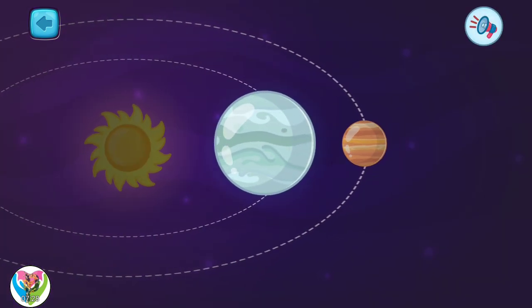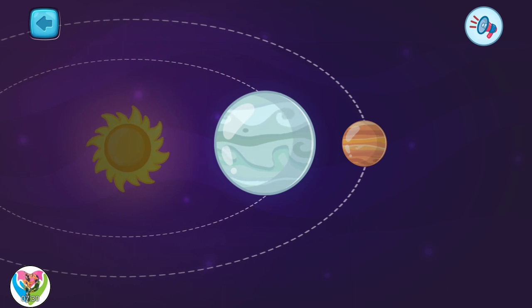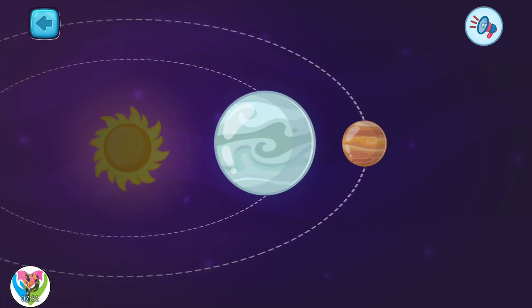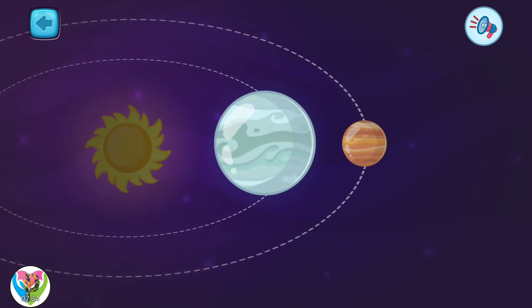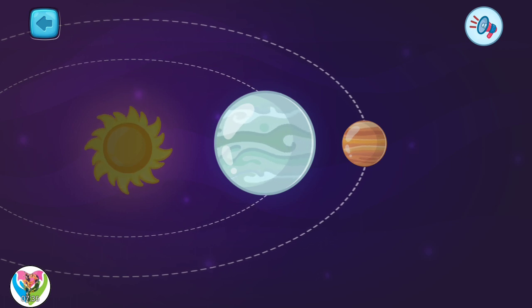This planet is called Mercury. It is the closest to the sun and is considered the first planet in the solar system.